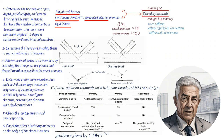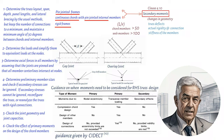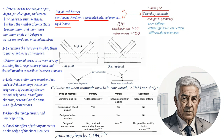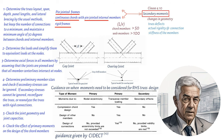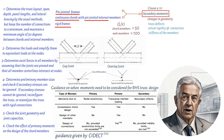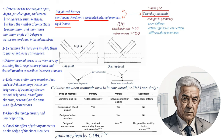By keeping the number of connections to a minimum, maintaining a minimum angle of 30 degrees between cords and internal members, and considering the fabrication procedure when deciding on a joint layout, truss designers can achieve a safe and cost-effective structure. We hope this video has been helpful in understanding the analysis and design of trusses. If you have any questions or comments, please feel free to leave them below, and don't forget to subscribe to our channel for more informative videos on engineering and design. Thank you.